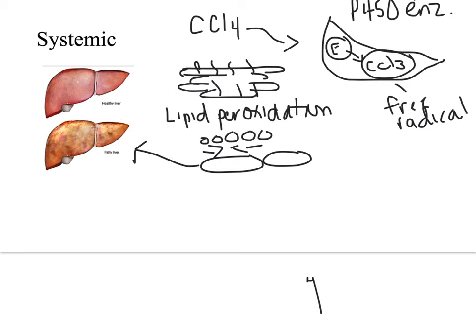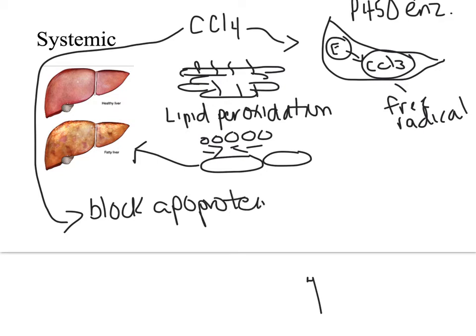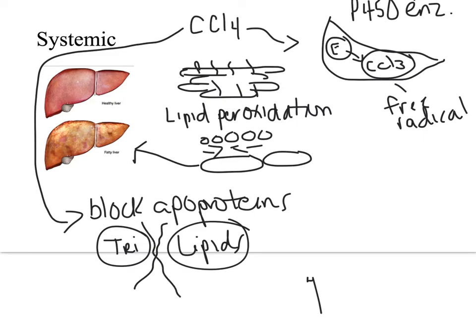Simultaneously to this occurring, carbon tetrachloride started blocking apoproteins from production. Apoproteins are important proteins, and what they do is they take triglycerides and lipids and they bind them together. But if we don't have that, these triglycerides and lipids are not bonding, and that's also contributing to the fatty liver.